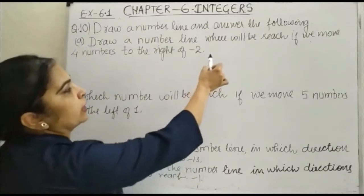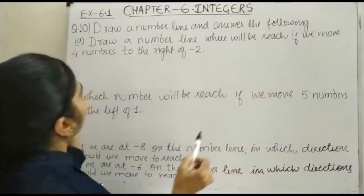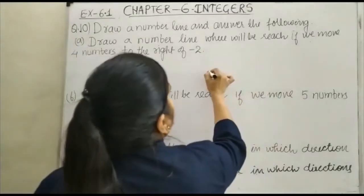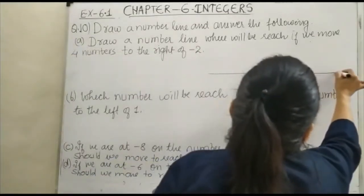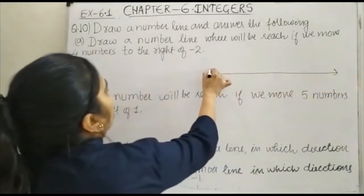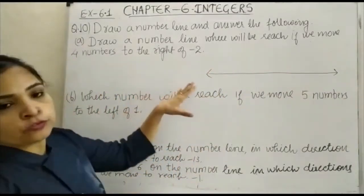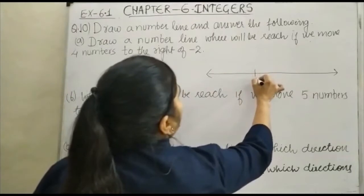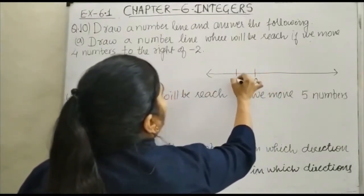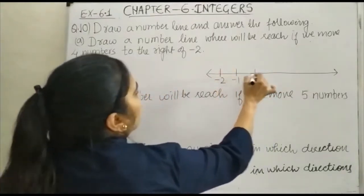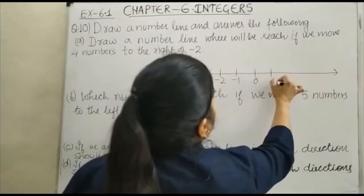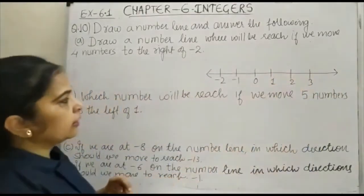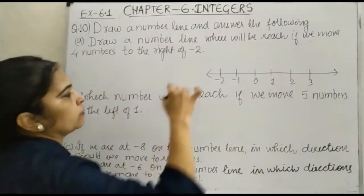Draw a number line — where will we be reached if we move 4 numbers to the right of minus 2? You can see here is your number line. We can plot 0, minus 1, minus 2, this is 1, and this is 2, and this is 3. Starting from minus 2, we move to the right.